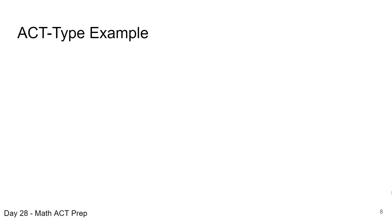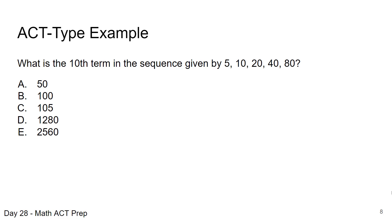Let's take a look at an ACT type example. Pause the video here and give this one a try and we'll come back and work it together. So this question asks what is the tenth term in the sequence given by 5, 10, 20, 40, 80. First of all, we don't really know yet if this is an arithmetic or geometric sequence.